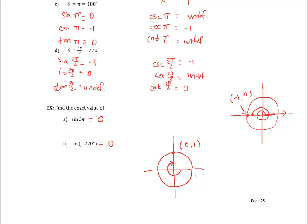The next thing we want to cover, coming up in a later lecture, is whether we can evaluate trig functions for other angles. Remember angles like 30 degrees, 60 degrees, 135 degrees? We'll look at all the special angles we've already graphed on our circles and find the trig function values for those.